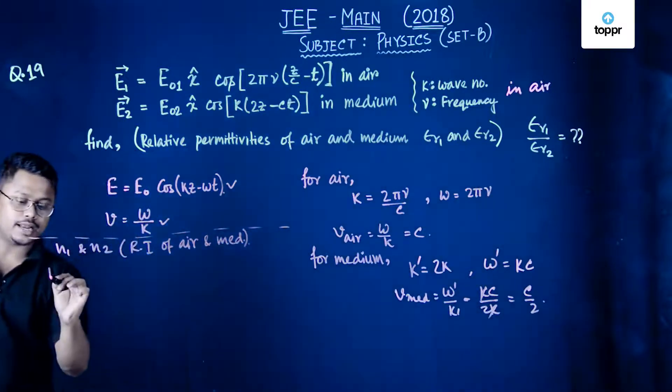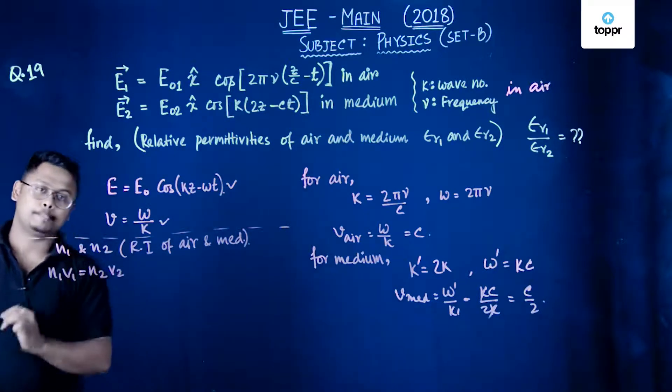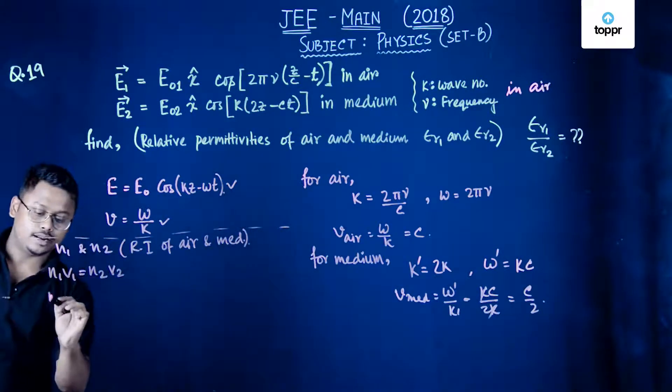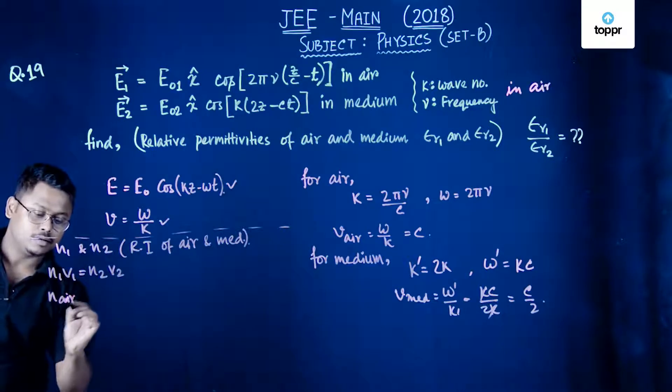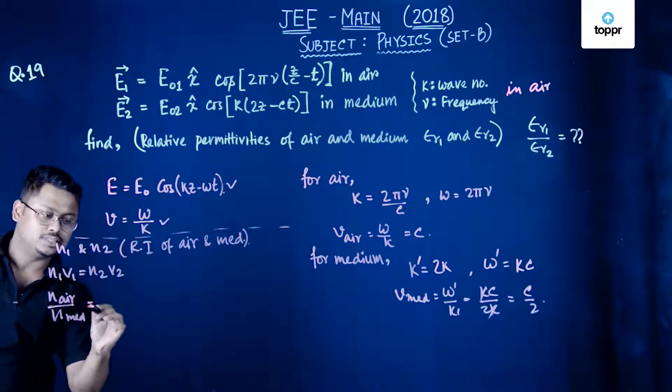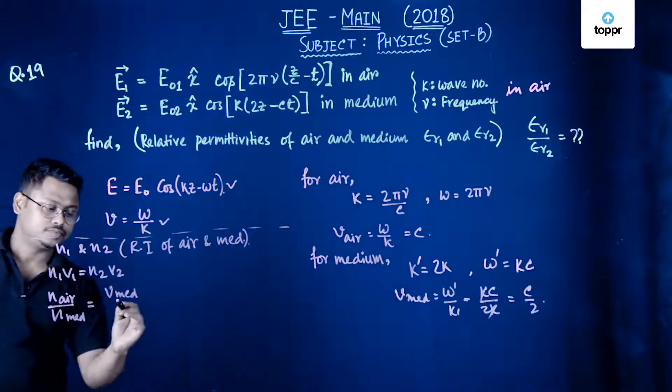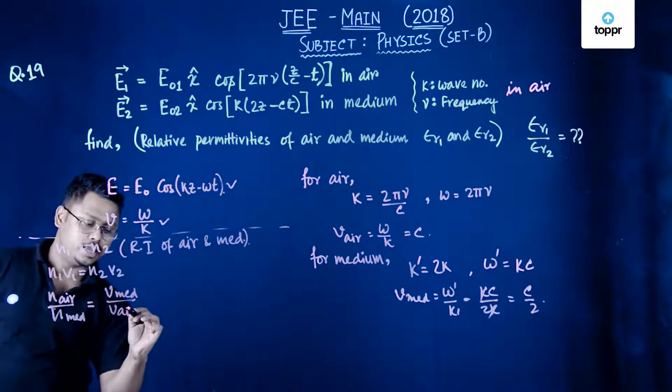So we can write n1 into v1 is equals to n2 into v2. So n of air upon n of medium is equals to v of medium upon v velocity in air.